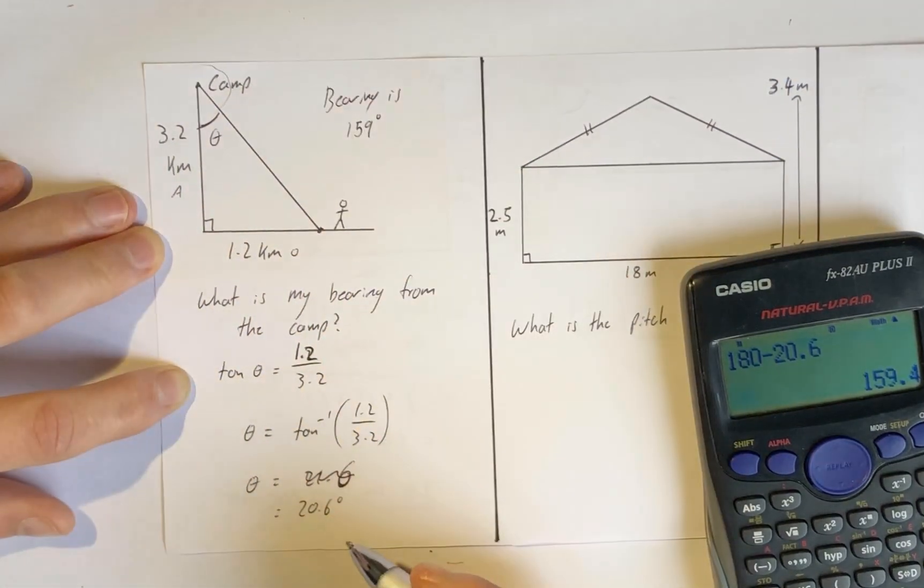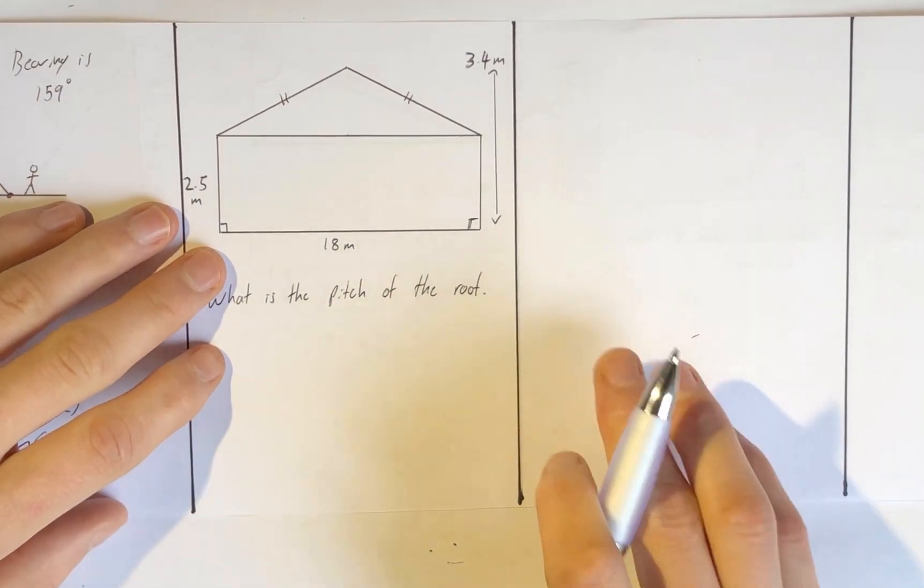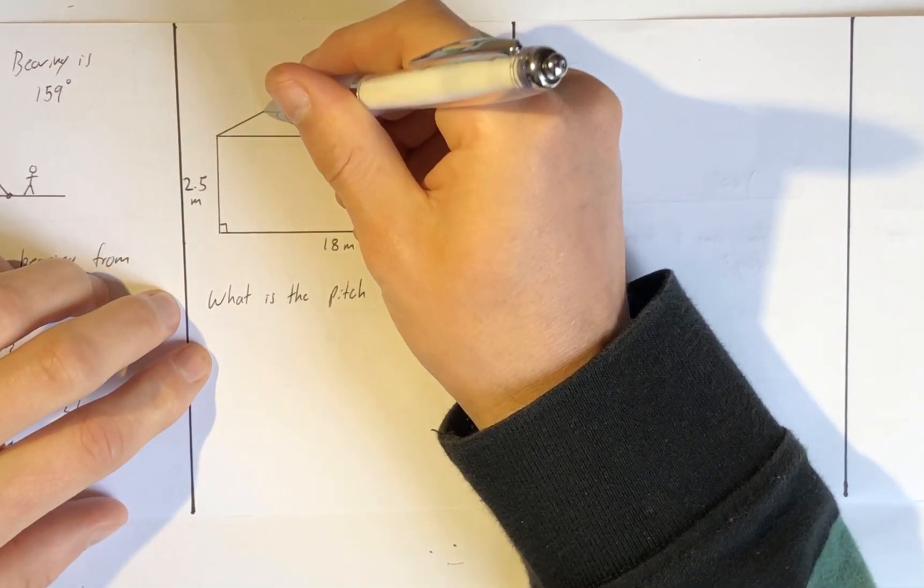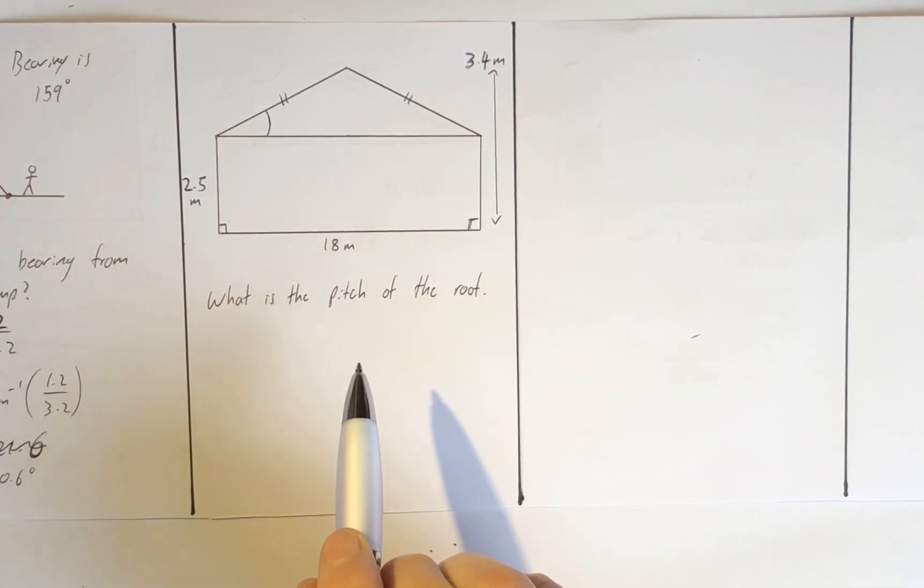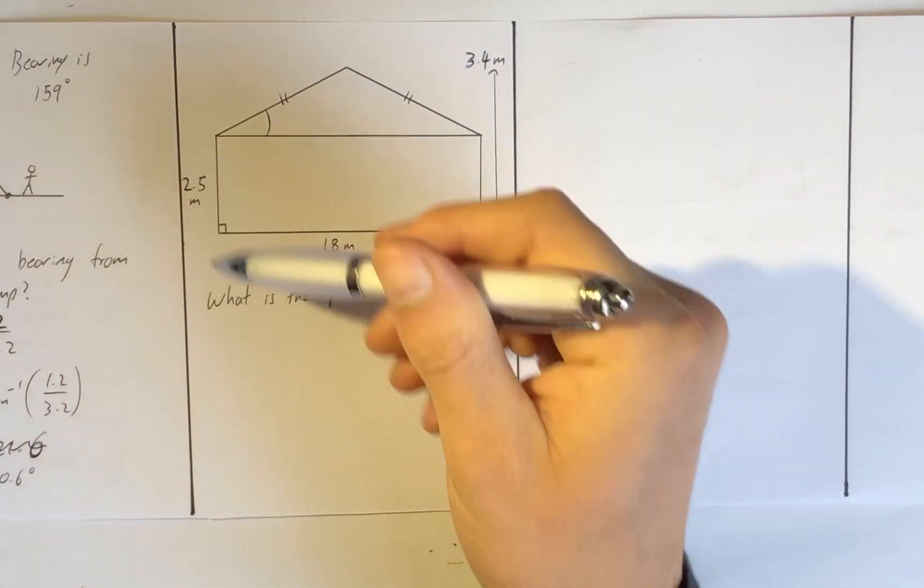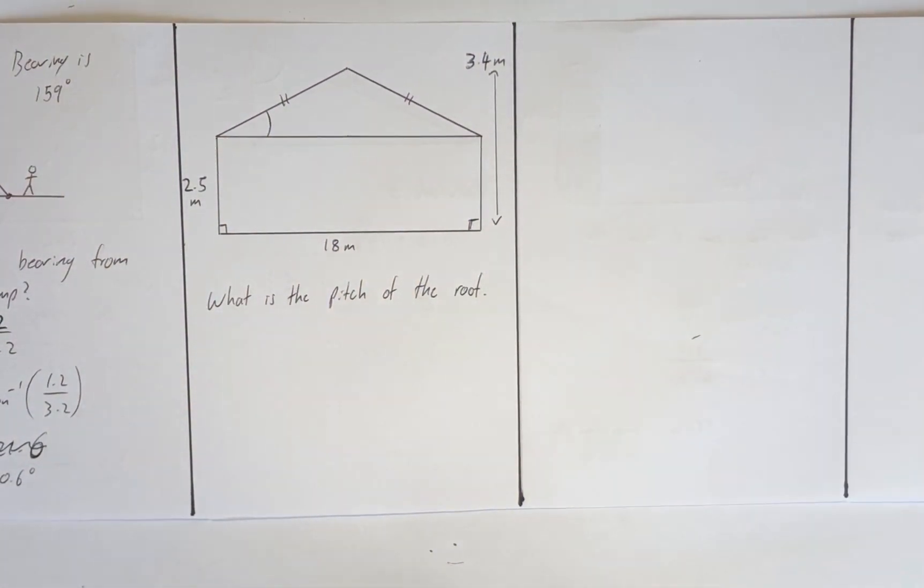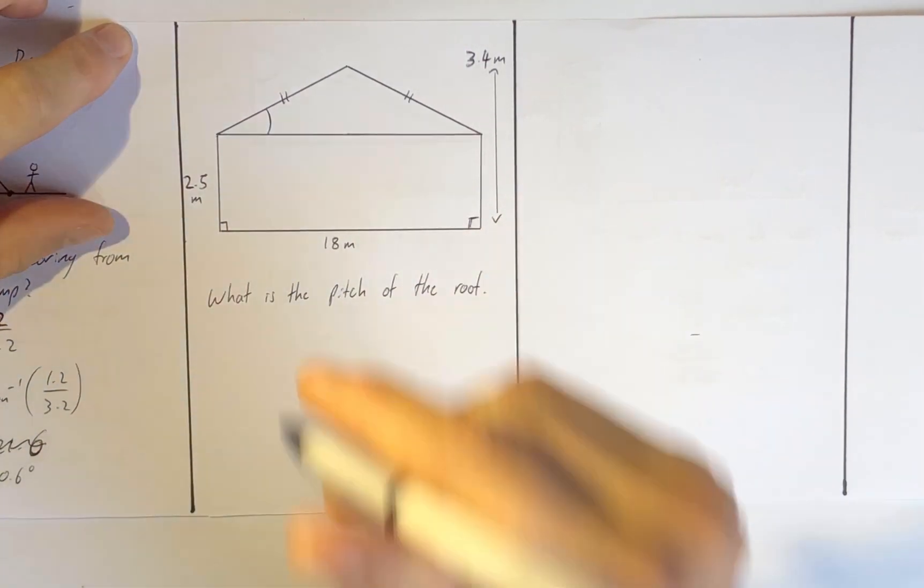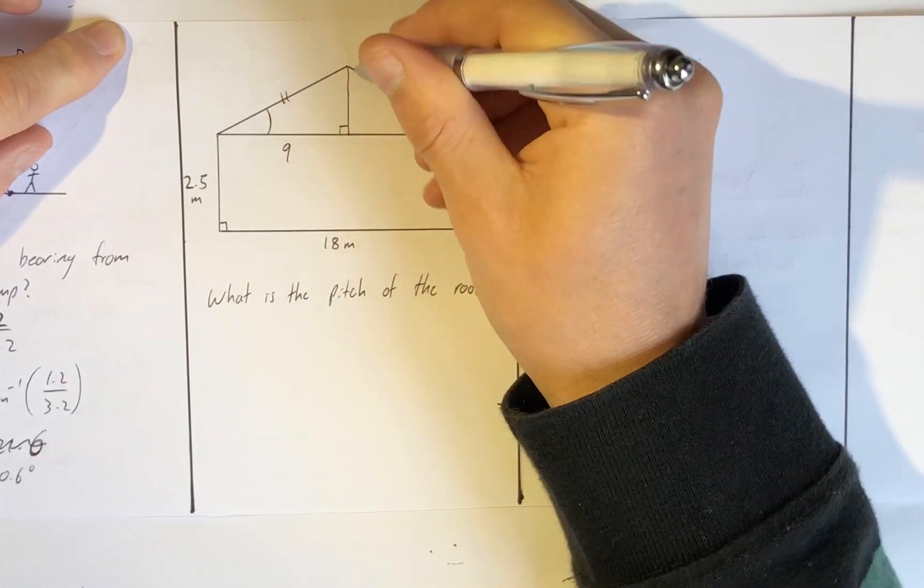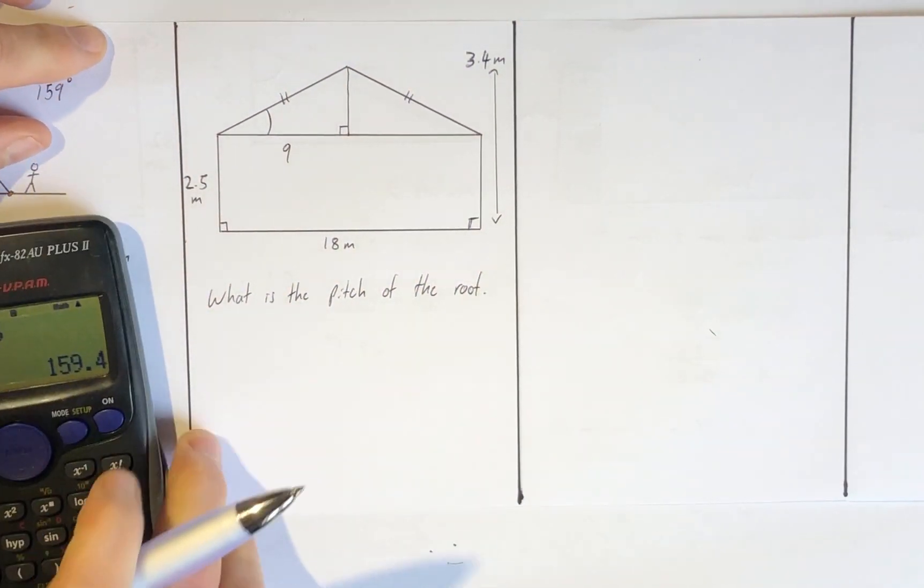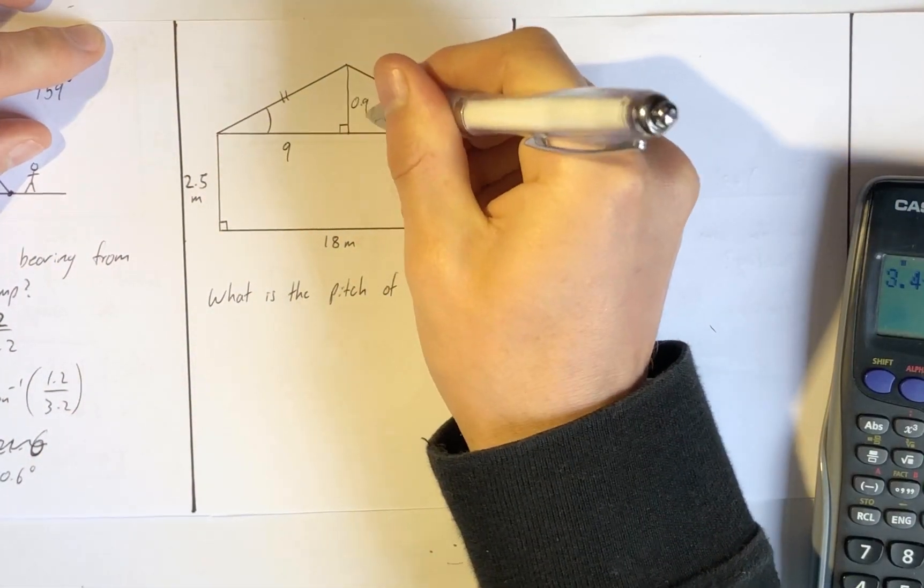Last problem for today: what is the pitch of this roof? That's basically asking what is that angle. I've got an 18 meter long floor, 2.5 meter high ceiling, and the very top of the roof is 3.4 meters. I need to get a right angle triangle out of this. I can cut this in half, make a right angle triangle, call that 9. I need to know this length here, which is 3.4 take away 2.5, so that's a height of 0.9.